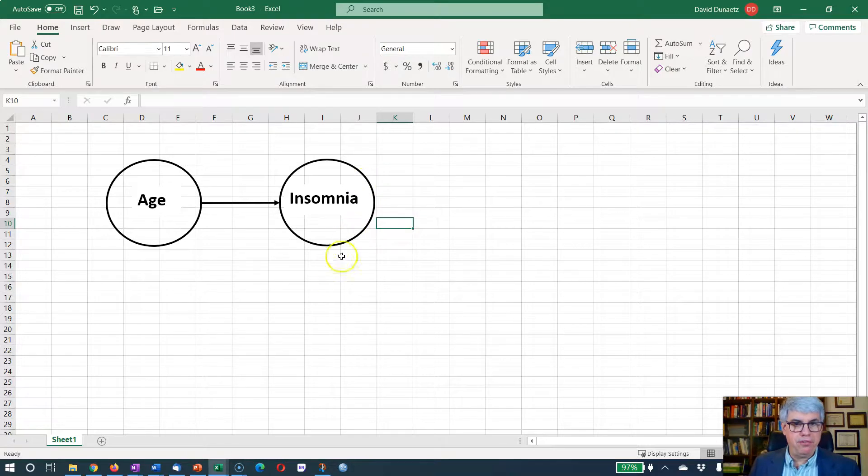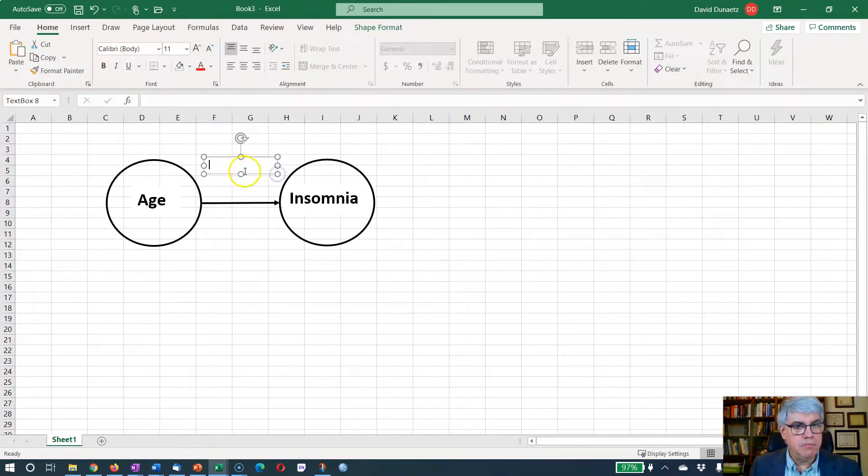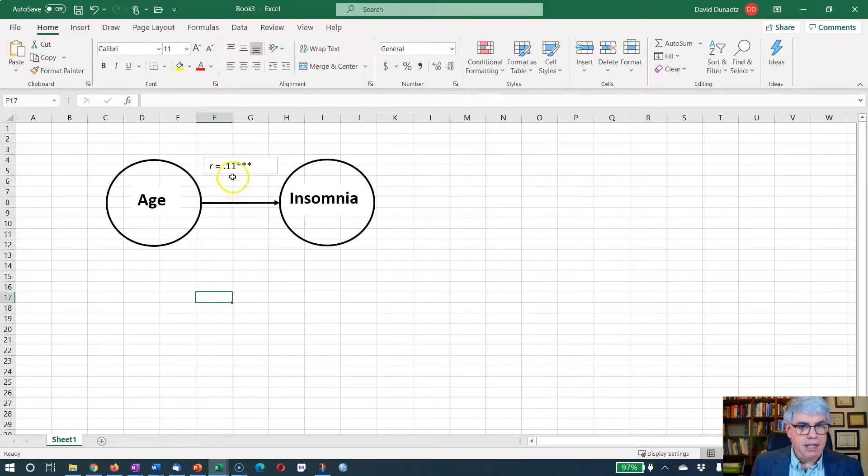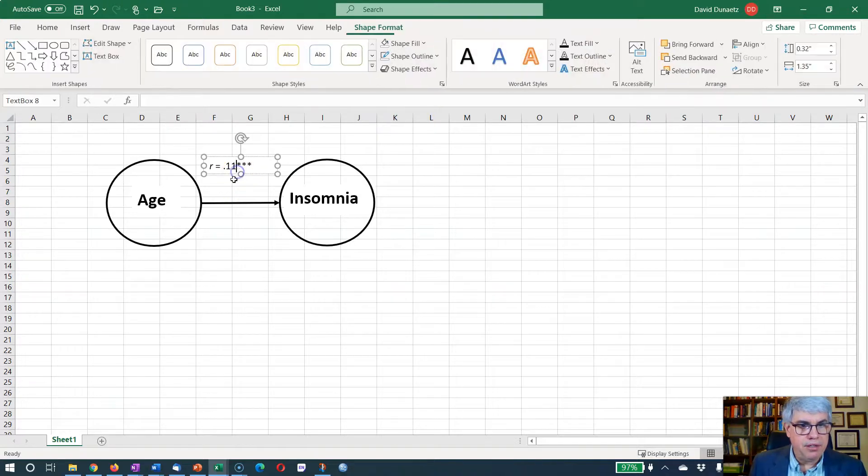Now I can put it more in the middle. I don't want the frame on that box. Let's take the shape outline and say no outline. And there I've got age in the box there. Now I'm going to select that. I'm going to copy it and unselect it. I'm going to do Ctrl V and I've got age there. I'm going to drag that over here and I'm going to change this to insomnia. Now let's see if I can get that to fit in the circle.